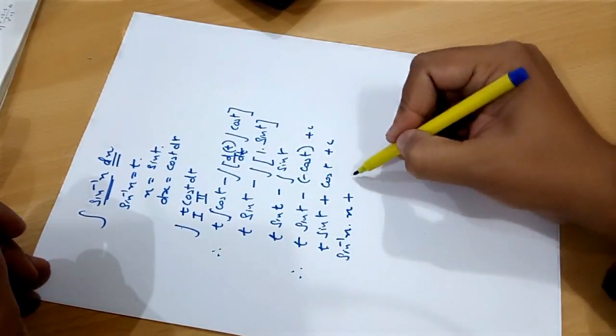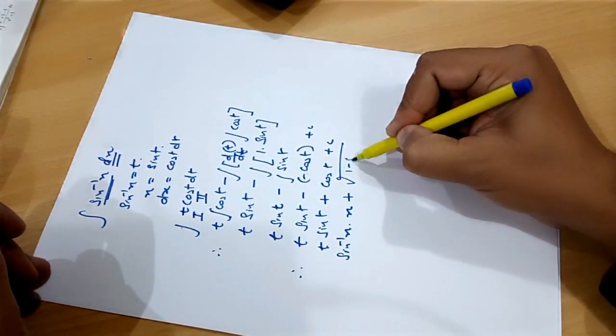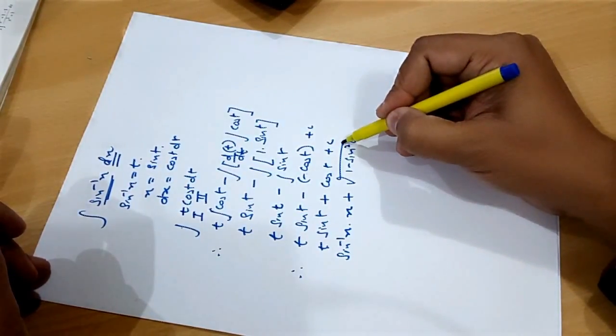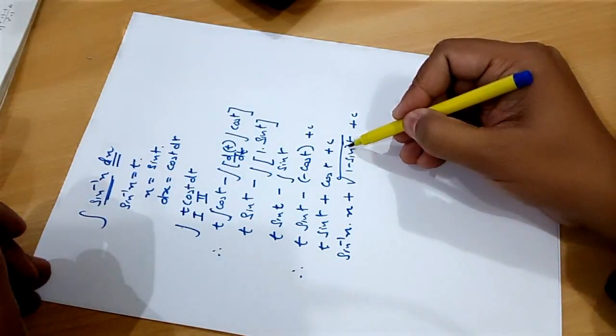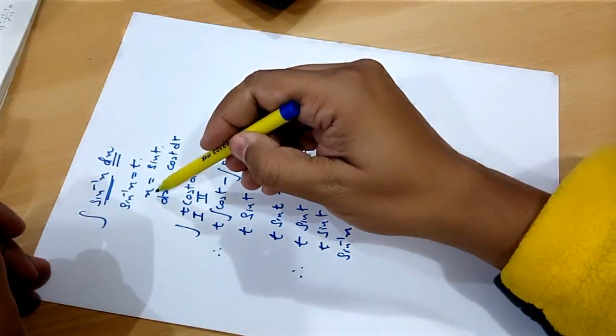Plus cos t. Cos t can be written as root of 1 minus sin square t. To this sin square t, we can write it as x square.